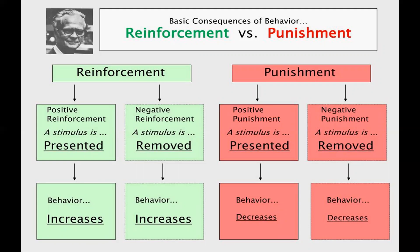Reinforcement can be positive or negative — in both cases, a stimulus is either presented or removed. In both positive and negative reinforcement, behavior is increasing — whether you want to get a stimulus (positive) or get rid of a stimulus (negative). Whereas in positive punishment or negative punishment, both behaviors are decreasing — you are avoiding that behavior. In positive punishment, a stimulus is applied; in negative punishment, a pleasurable thing is removed.